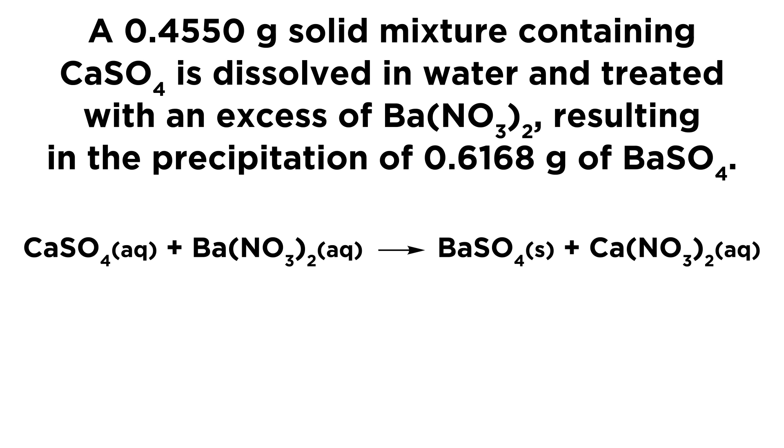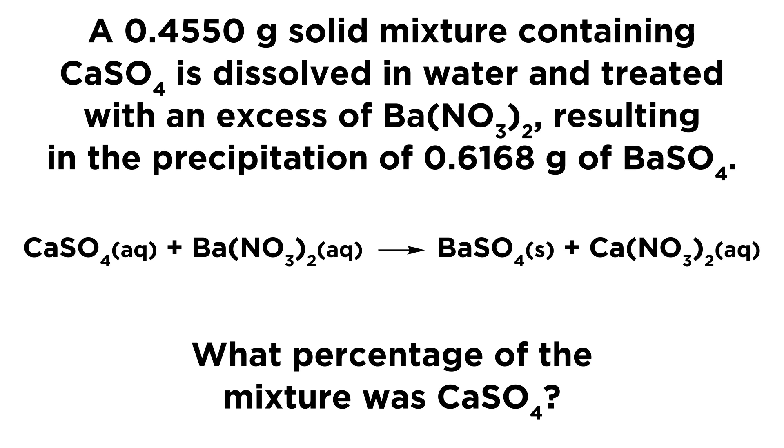And so we have some solid mixture, some of it is calcium sulfate, some of it is something else, we're not sure. And what we want to figure out is what percentage of that mixture was calcium sulfate. And so we're going to do gravimetric analysis in order to figure this out.